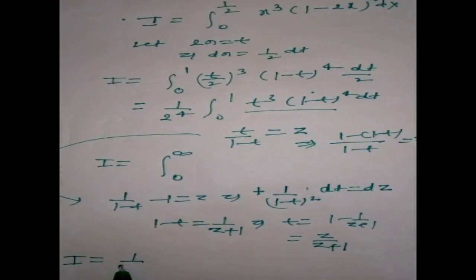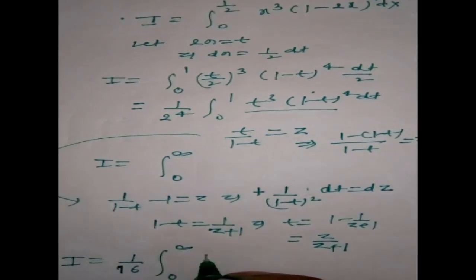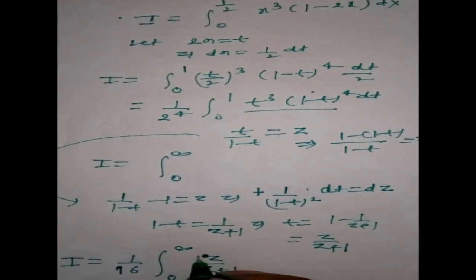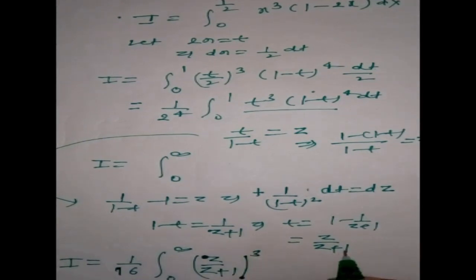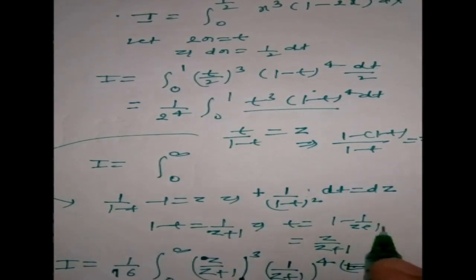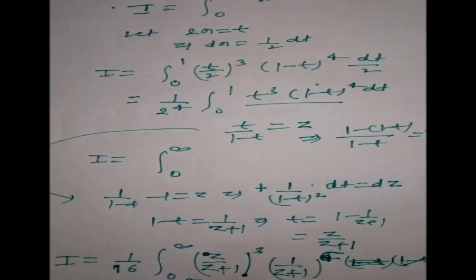Substituting, I becomes (1/16) times integral from 0 to infinity of [z/(z+1)]³ times [1/(z+1)]⁴ times [1/(z+1)²] dz. Combining powers: the denominator gives (z+1) to the power 9, and collecting constants gives a factor of 1/16. So the integral simplifies to (1/16) times integral from 0 to infinity of z³ divided by (z+1)⁹ dz.